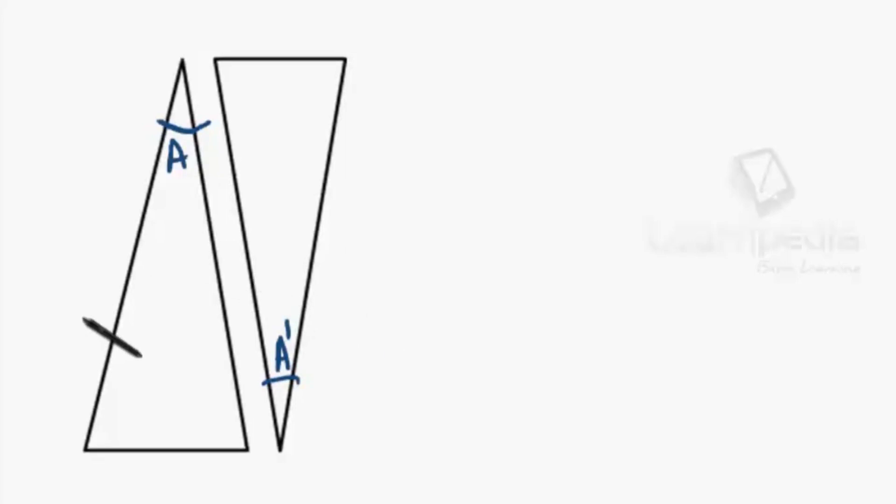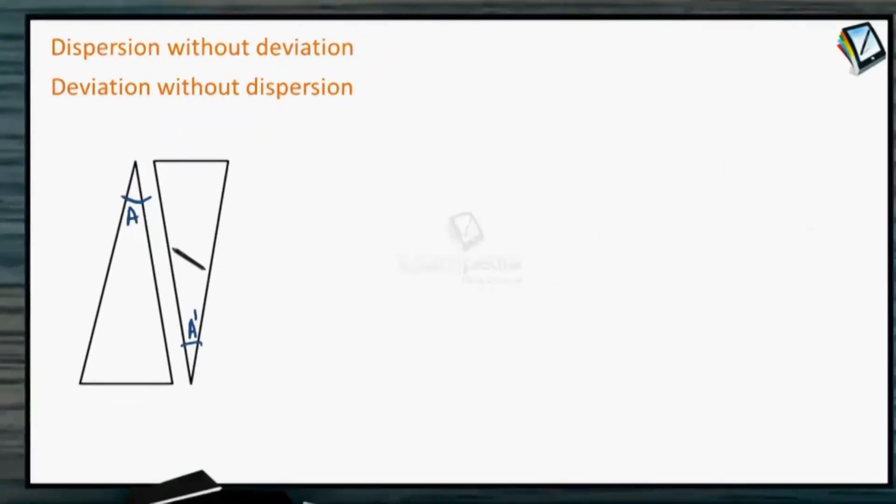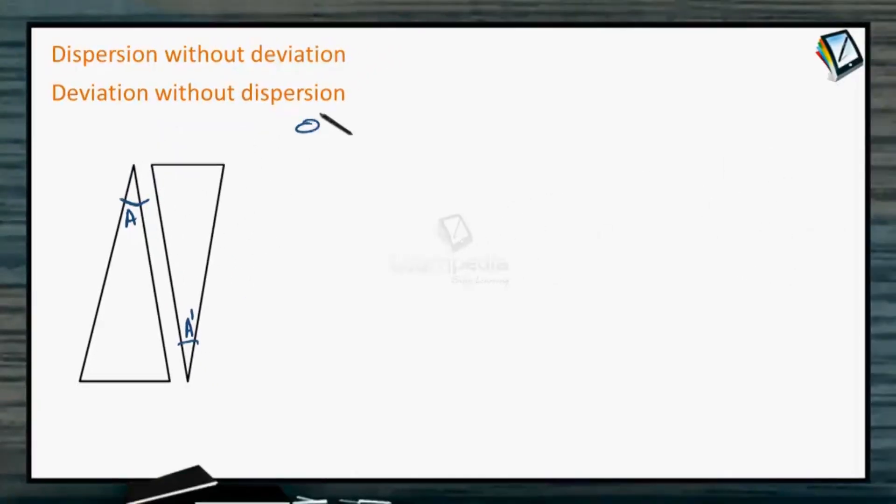For example, refractive index for this prism, if written as μ_v for violet, then μ_v dash for violet in case of this material. So there are two different materials, two prisms, which are oppositely directed. Here, the point to be noted is that they are oppositely directed.